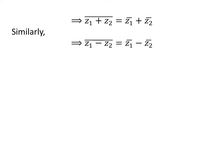Similarly, we can prove that the conjugate of z1 minus z2 is equal to the conjugate of z1 minus the conjugate of z2. So, the above two statements give us the conjugate of z1 plus or minus z2 is equal to the conjugate of z1 plus or minus the conjugate of z2. Thus, the identity is proved.